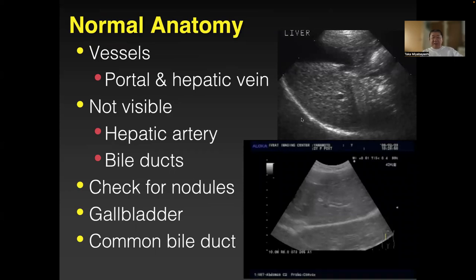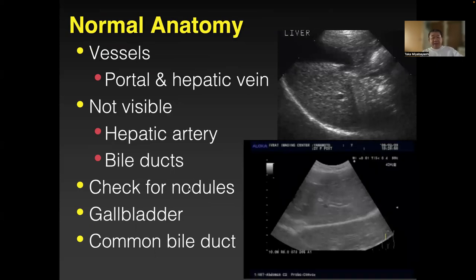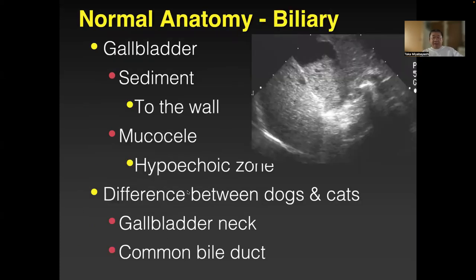For ultrasound of the liver, hair clipping is important. Microheptica is very difficult to scan — you may have to do an intercostal approach. You can see two vessels: the portal vein has a hyperechoic wall, while the hepatic vein does not. Check for nodules. Check the gallbladder for sludge inside — sludge may not be a big deal, but a mucocele may need surgery. Also check for bile stones, which may need removal.